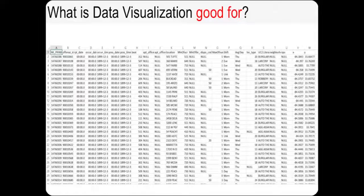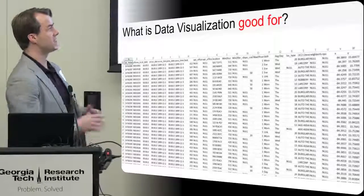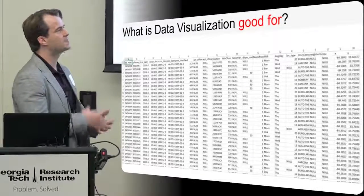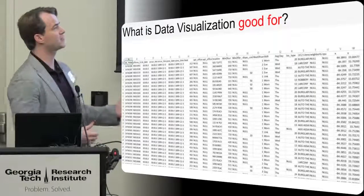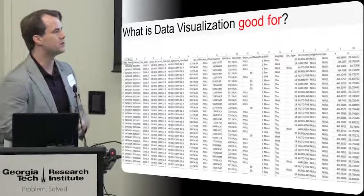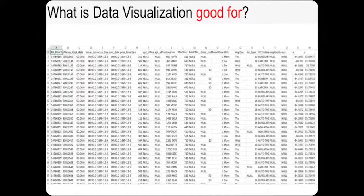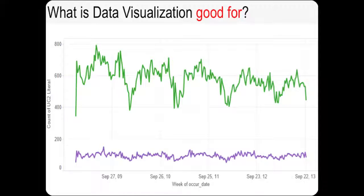Data visualization is also good for analyzing data when you don't know what you're looking for. This massive spreadsheet is actually representative of a lot of the types of crimes and accident reports in Atlanta. If we were presented with this information, it might be very difficult to figure out exactly what we wanted to learn. We might want to explore temporal trends — is crime increasing or decreasing? One of the things that data visualization is good for is helping us find insights we might not find in text-based analysis alone.